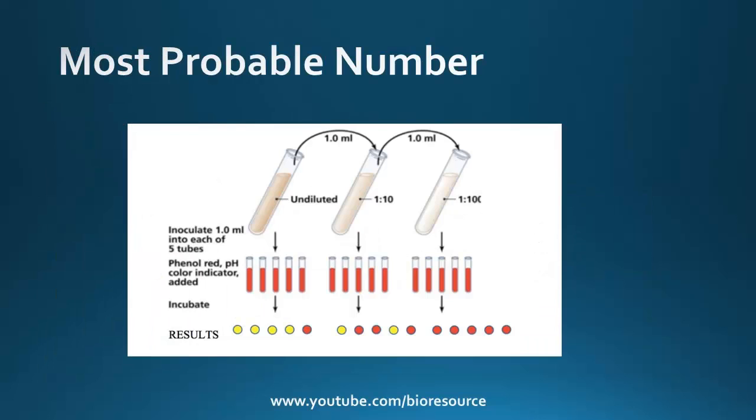The other method is the most probable number. This technique is used mainly to measure bacterial cultures that will not grow on solid media. The sample is diluted repeatedly and inoculated on several growth tubes for each dilution point, and the number of colonies are counted from each positive tube. It's a statistical method and determines the 95% probability that bacterial population will fall into a certain range.